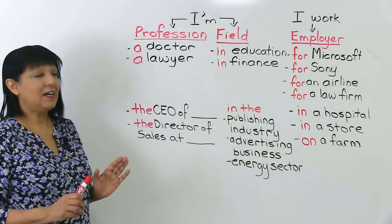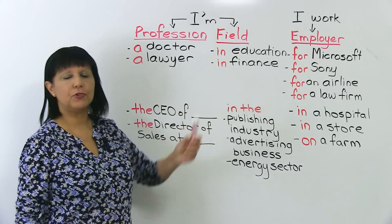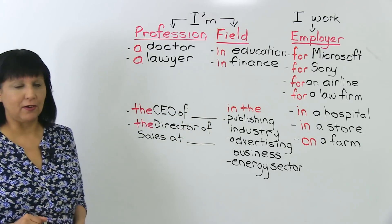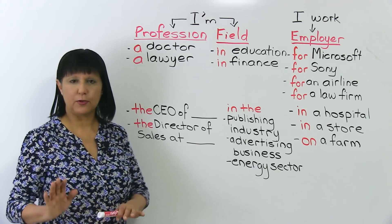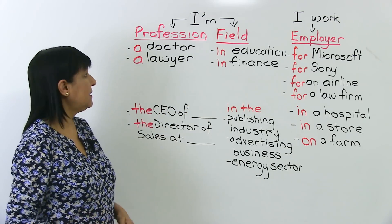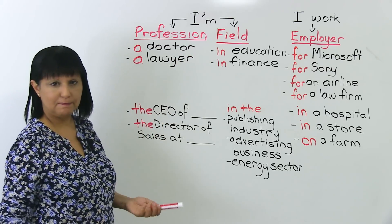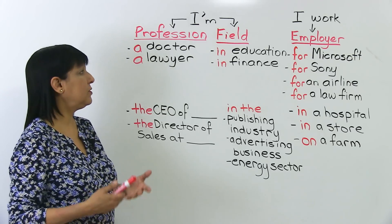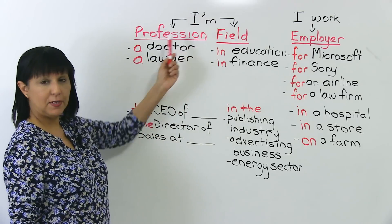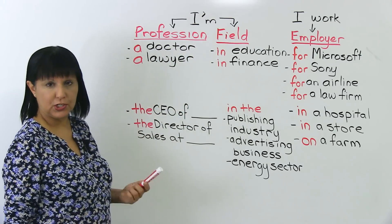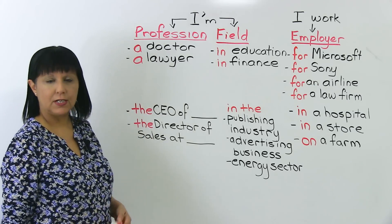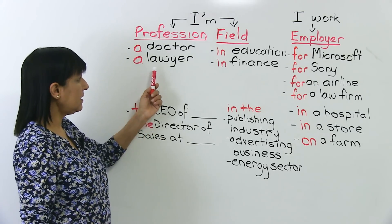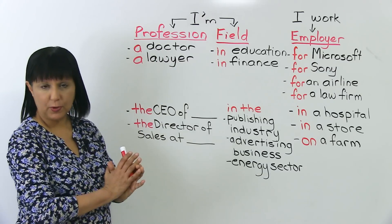At the top here, I've shown you three easy, simple ways to answer the question. The first one is: you could simply say, when someone asks you 'what do you do?', I'm plus your profession. For example, I'm a doctor, I'm a lawyer, I'm an accountant. That's one way to answer.